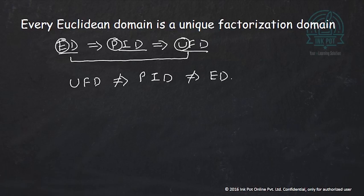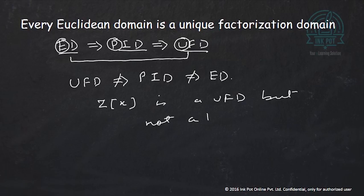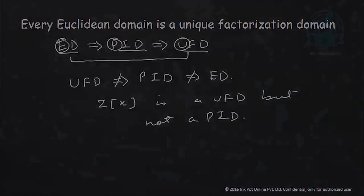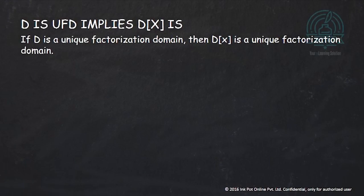An example of a UFD which is not a PID is ℤ[x] — it is a UFD but not a PID. The last result says that if D is a unique factorization domain, then D[x] is also a unique factorization domain. So the ring of polynomials over a UFD is again a UFD. There is no proof of this result given here.